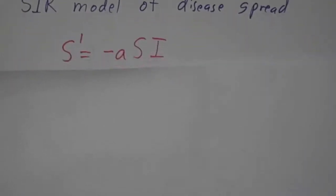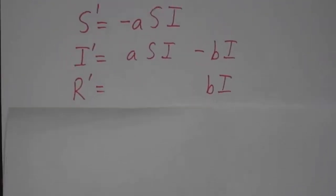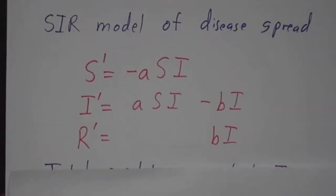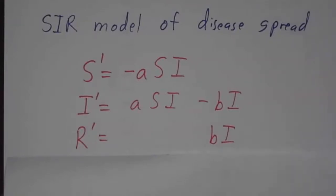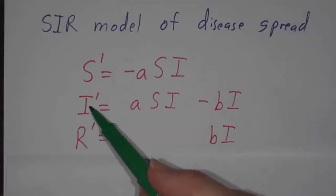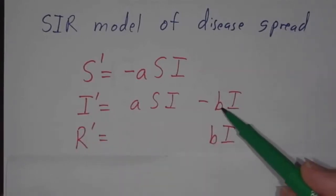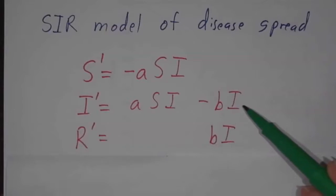Zombieism is a kind of disease, so we start with our usual SIR model for how to model the spread of disease. Some people are susceptible, some are infected, some are recovered. The rate at which people go from susceptible to infected is a constant times the number of susceptibles times infected. And the rate at which people go from infected to recovered is a constant times the number of infected people.